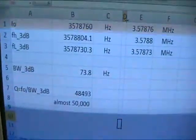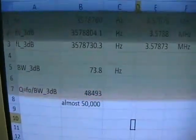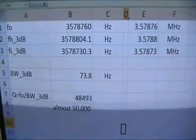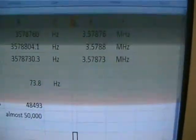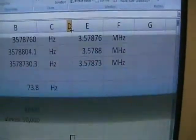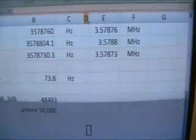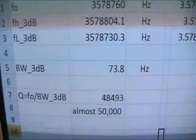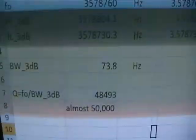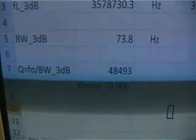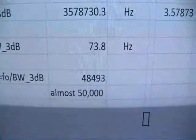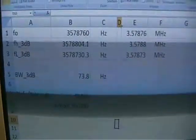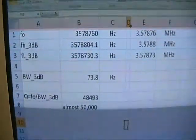Here's the quick calculation done in Excel. f0, or the resonant frequency, 3.57876 megahertz. The high frequency 3dB: 3.57878 megahertz. And the low 3dB frequency: 3.57873 megahertz. This gives us a bandwidth 3dB of only 73 hertz, incredibly small bandwidth. Actually too small for radio work with voice signals, but okay for oscillators. And then the Q by the calculation, f0 resonant frequency over bandwidth 3dB, is 48,493, or almost 50,000. No other devices will give you Qs of this high. Typical inductor Qs for RF work are around 100.